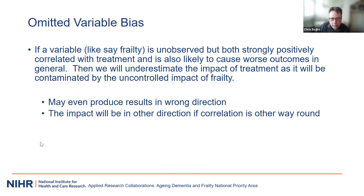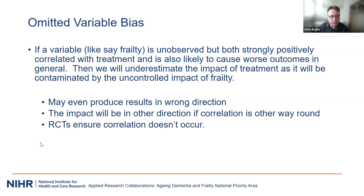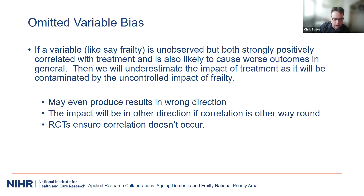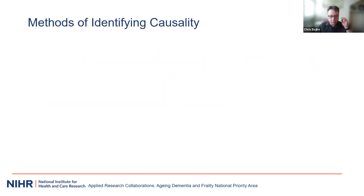Depending on the strength of the relationships, results may even go in completely the wrong direction. If healthier patients tend to receive the treatment, we might overestimate its impact. The key thing to understand is that RCTs ensure this correlation doesn't occur — they don't eliminate other influencing factors, but they ensure those factors aren't correlated with treatment allocation, so we can safely compare means.